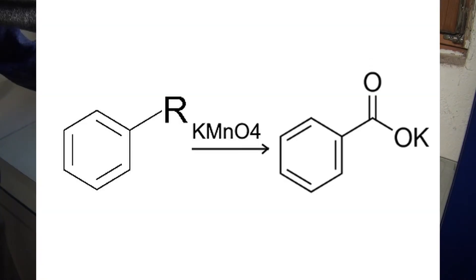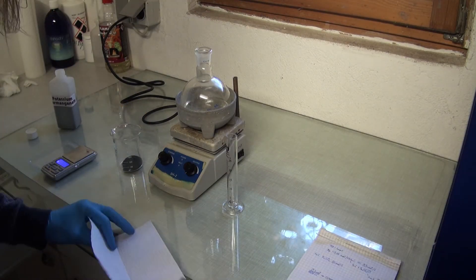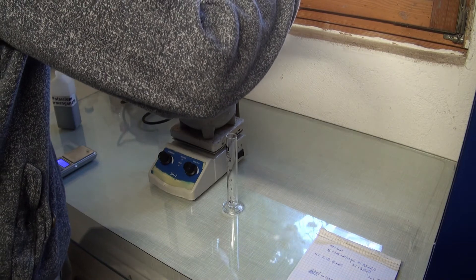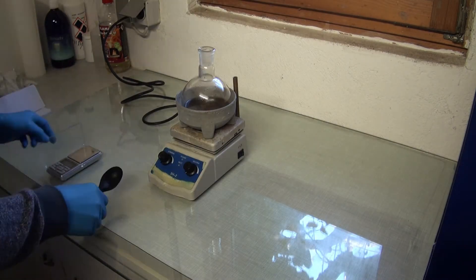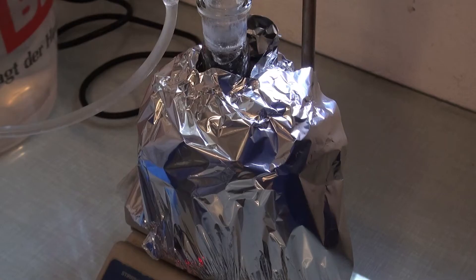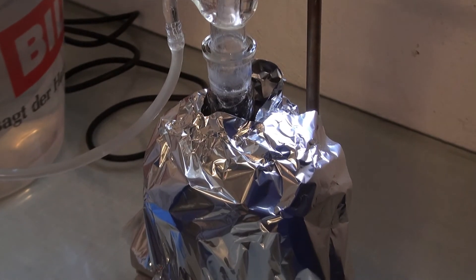Potassium permanganate was used as an oxidizer, but in a big industrial setting, oxygen from air over a vanadium oxide catalyst could be used instead. The aromatic mixture was added into an aqueous potassium permanganate solution and then refluxed for 2 hours.